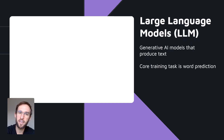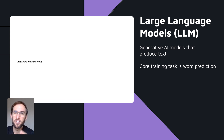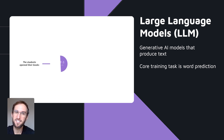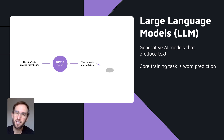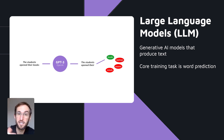Most of the generative AI models that produce text are large language models, or LLMs. These are models trained on large quantities of text where the core training task is typically some form of next-word prediction — predicting the missing word in a sequence of text. Sounds simple, but it turns out to be a highly effective task when you do it over millions, billions, or trillions of words.